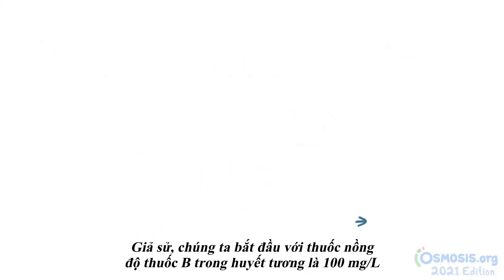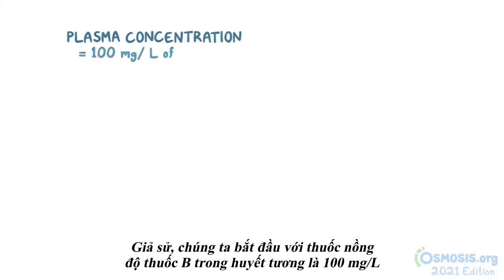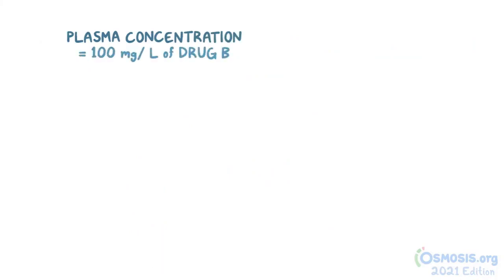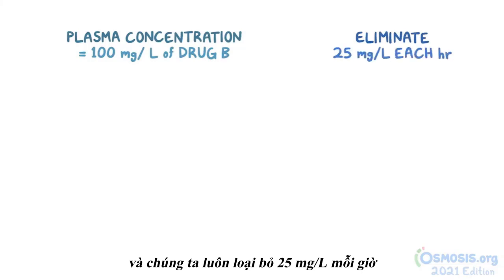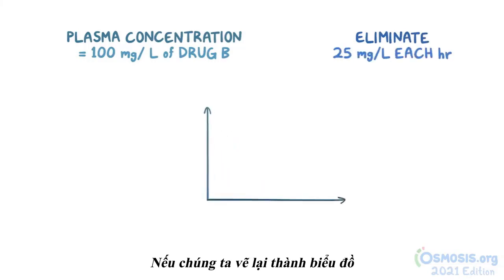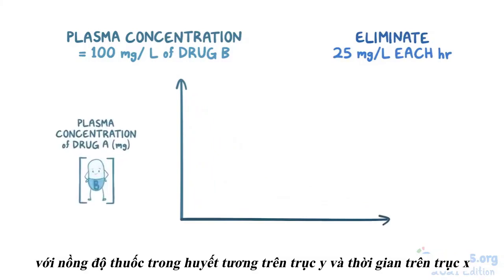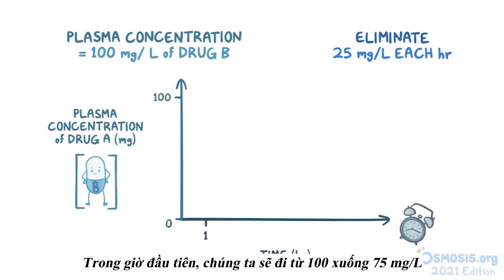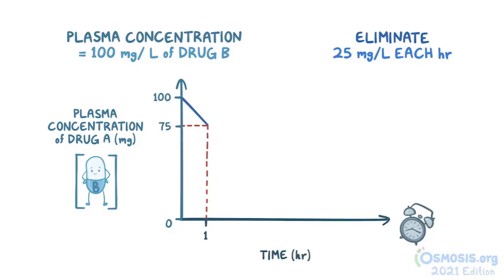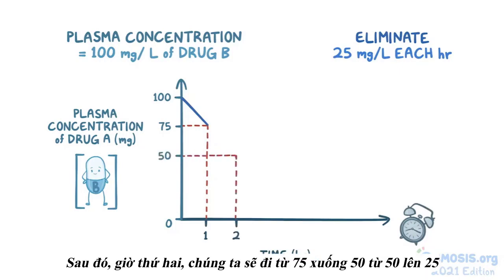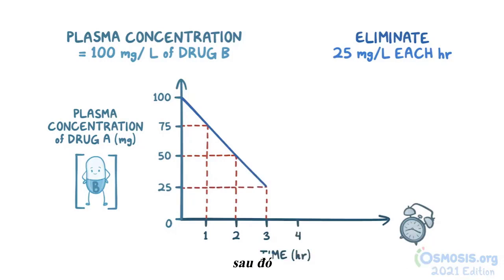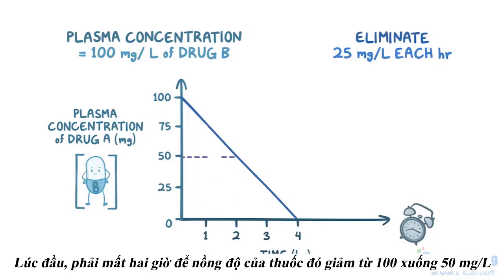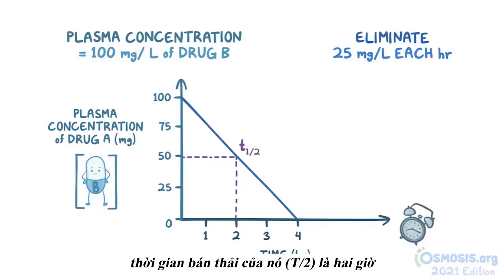For example, starting with a plasma concentration of 100 mg/L of drug B and always eliminating 25 mg/L each hour: during the first hour we go from 100 to 75 mg/L, then from 75 to 50, then from 50 to 25, and then down to zero — producing a straight line on the graph. It takes two hours for the concentration to drop from 100 to 50 mg/L, so its half-life is two hours.